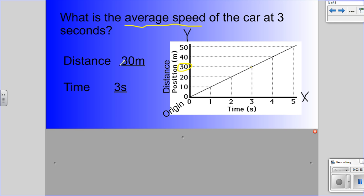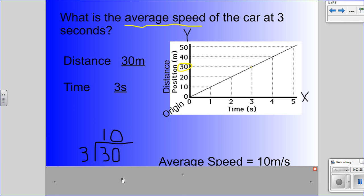So we're going to put our distance here, 30 meters. And our time here, 3 seconds. And then we have to solve that problem. Distance divided by time, 30 divided by 3. Everyone knows how to do that. 30 divided by 3 is 10.